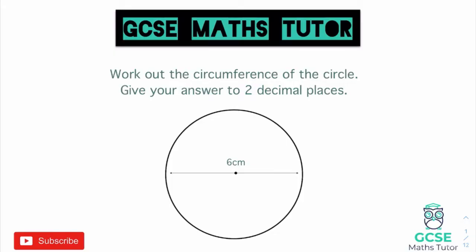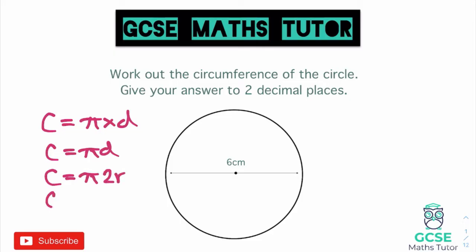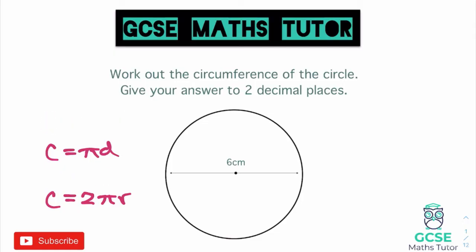Looking at the circumference of a circle first. The formula is: circumference equals pi multiplied by the diameter. When we write the formula, we don't write the times sign, so we write circumference equals pi d. There is also another formula: circumference equals 2 pi r, which is the same thing rearranged.